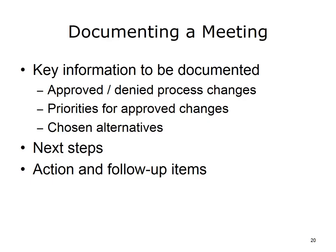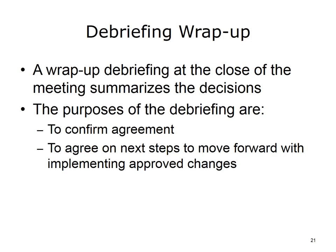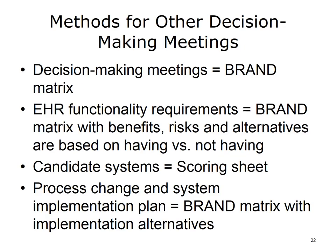Decisions on each proposed process change can be documented by adding columns to the BRAND matrix for approval and priority. The chosen alternative would be documented as an approval and other alternatives marked non-approved. Like closing a sale, the wrap-up section summarizes the decisions, confirms agreement, and agrees on next steps to move forward with implementing approved changes. The method applied to a process redesign meeting also applies to other types of EHR-related decisions — what changes is the information required for making the decision, while the meeting format and planning can remain the same.